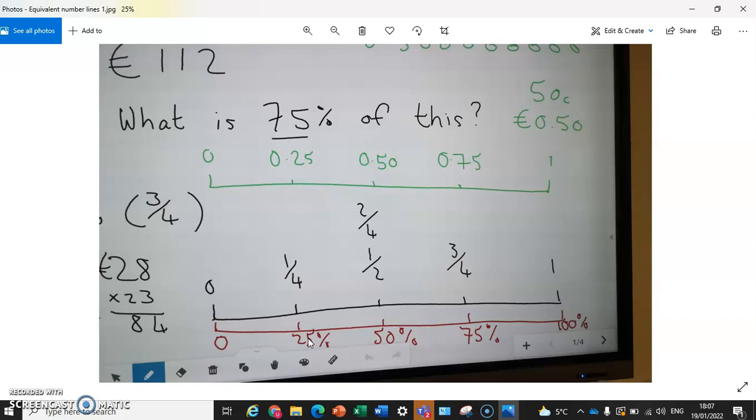And you'll notice a little, an interesting little pattern emerging here. 0.25 is the same as 25%, so you have 2 and 5 and 2 and 5.